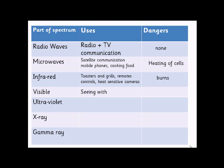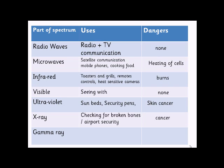Visible light is pretty obvious — we use it to see, and thankfully there are no dangers. Ultraviolet is emitted from the Sun and is used in sunbeds and black lights for security pens. The big danger of UV is skin cancer and damage to your eyes, which is why sun cream and sunglasses carry a UV protection factor.